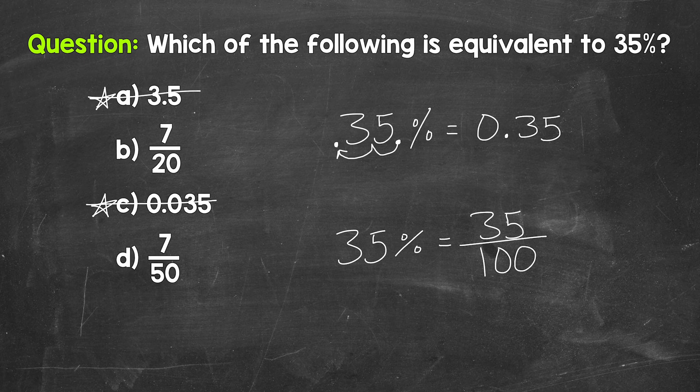But looking at our choices, we don't have 35 over 100, or 35 hundredths. So we need to see if we can simplify this fraction. And we can. 35 and 100 have a greatest common factor of five that we can divide both by in order to simplify. So we need to divide 35 by five and 100 by five.